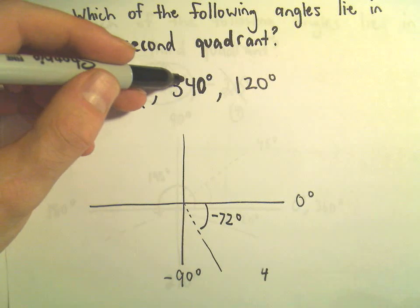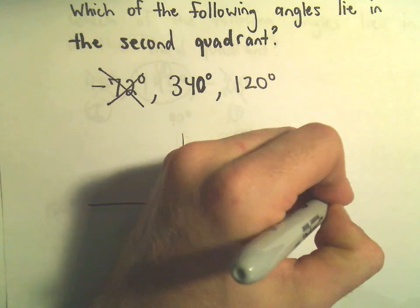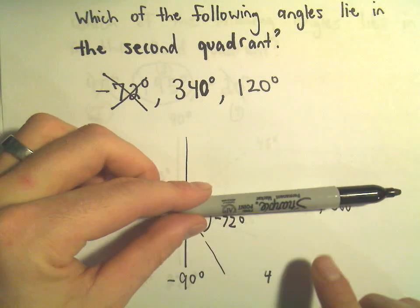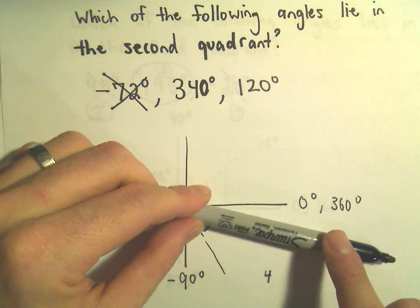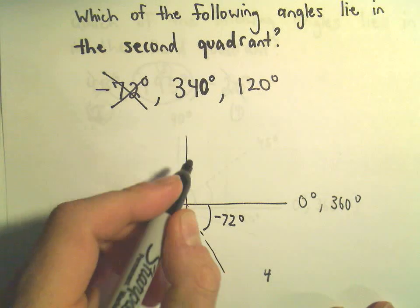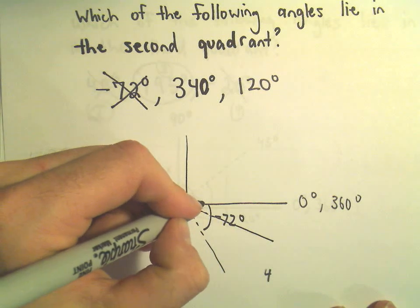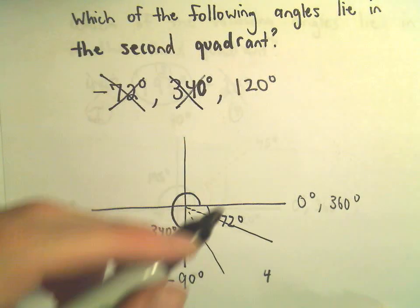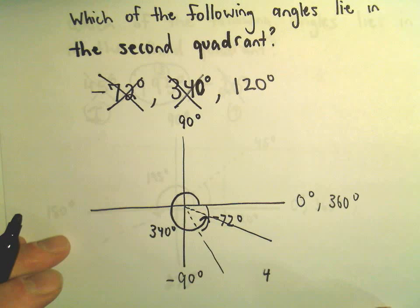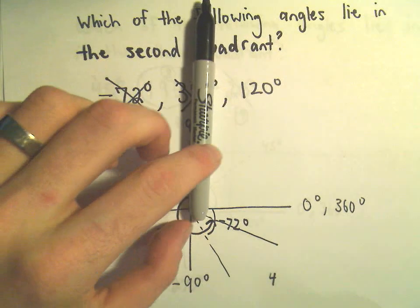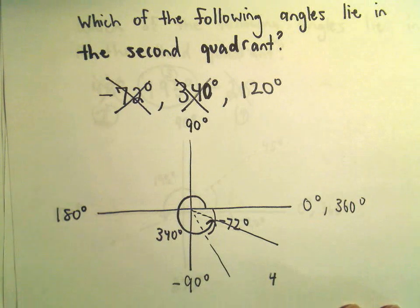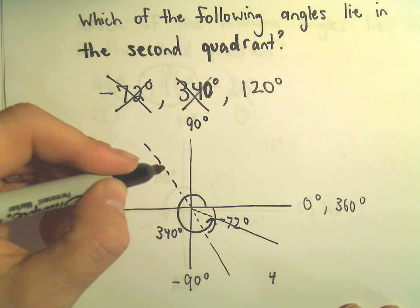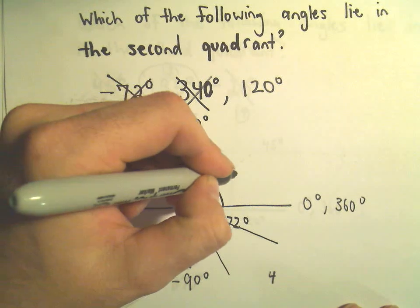340 degrees — if you go all the way around you've turned 360 degrees, but 340 is a little bit less than that, so our angle 340 degrees also falls somewhere in the fourth quadrant. Not correct either. Positive 120 degrees — the top is 90 degrees and halfway around is 180 degrees. Certainly 120 falls between 90 and 180, so 120 degrees is going to be somewhere in the second quadrant.